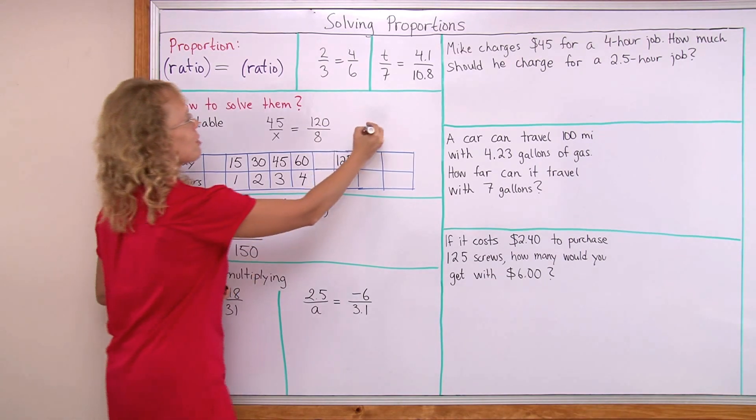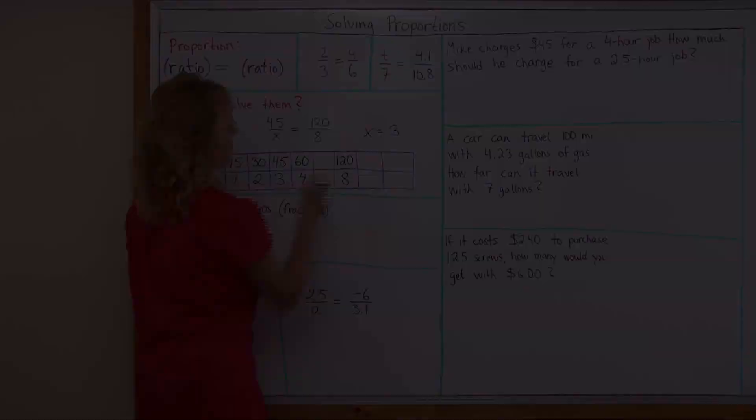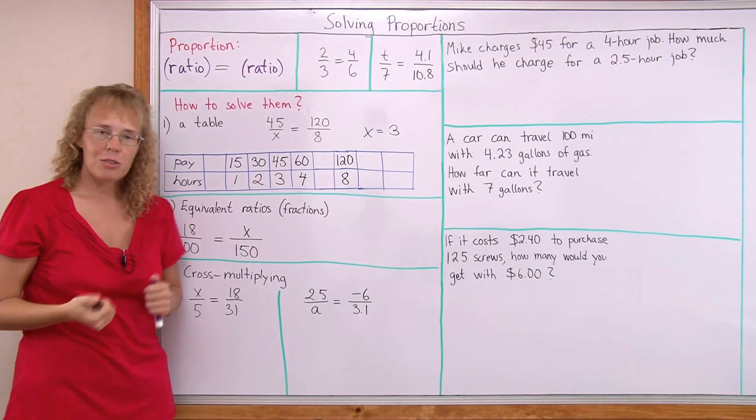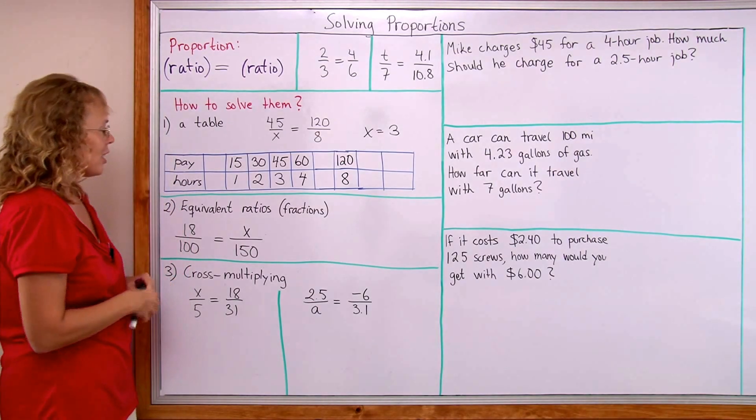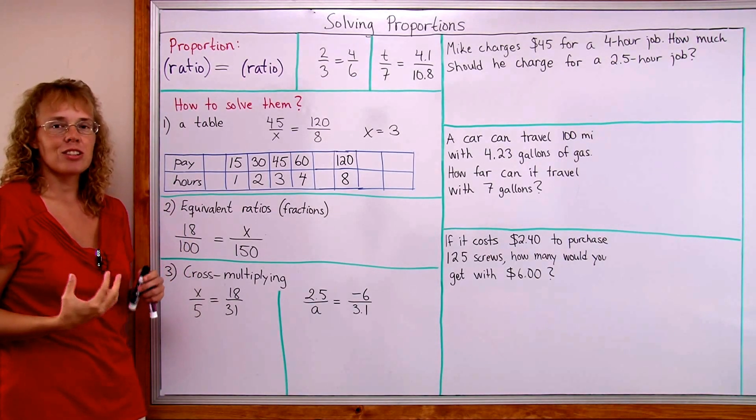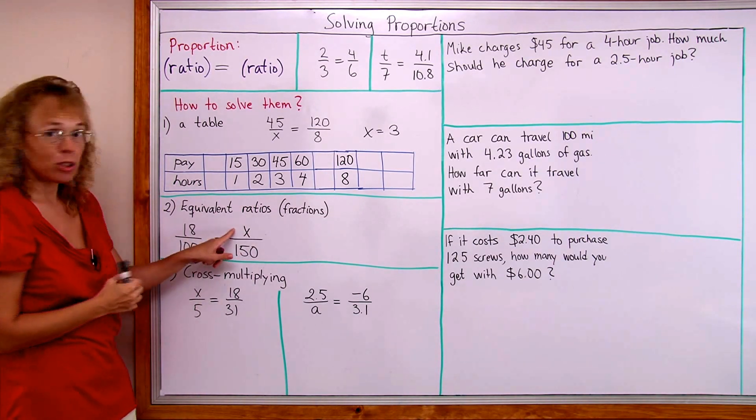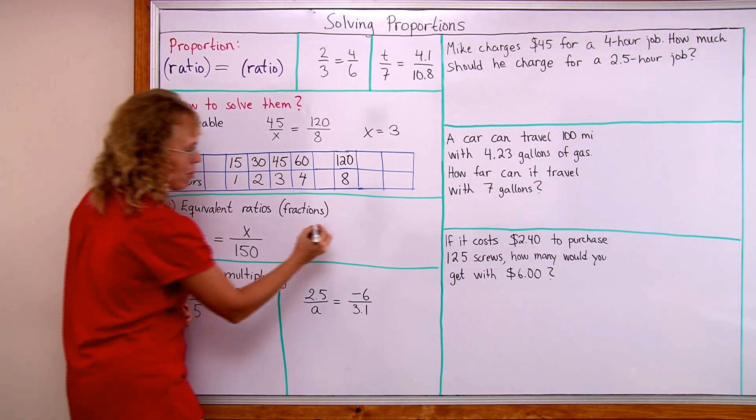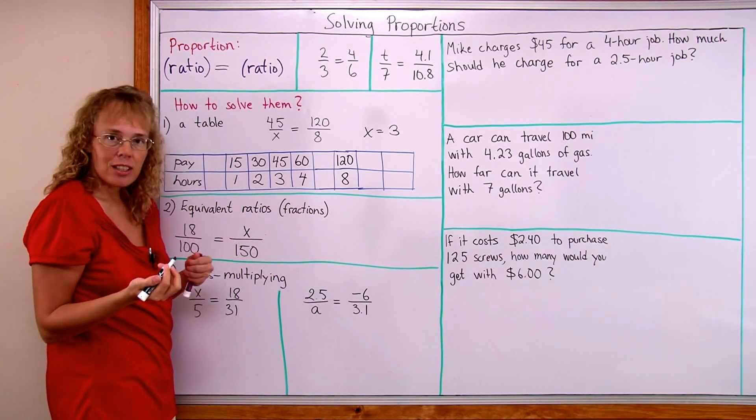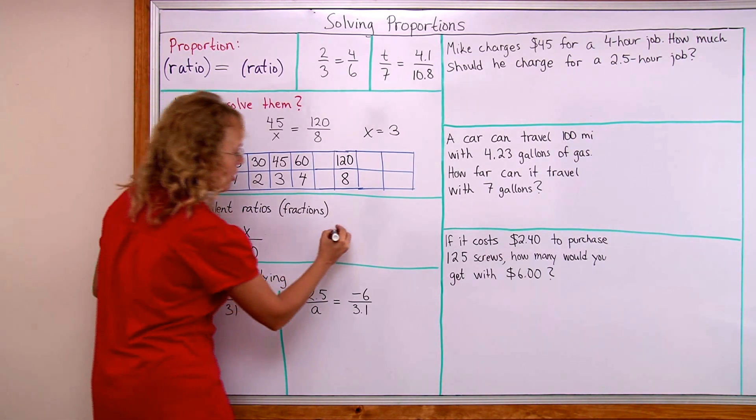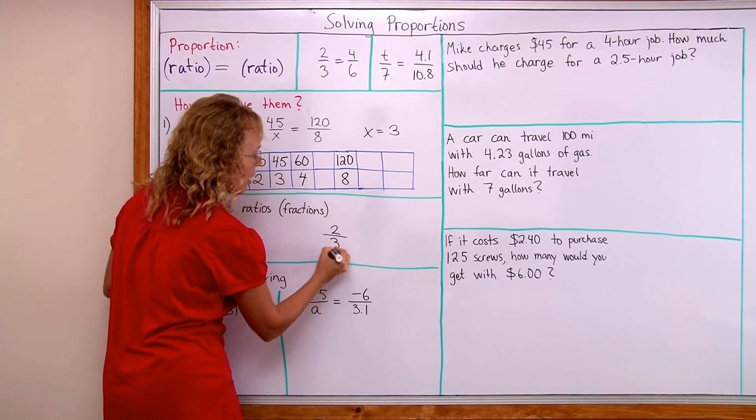For 45 dollars you would have to work three hours. Okay, so X equals 3. Another way is to think through equivalent fractions. Equivalent ratios or equivalent fractions. And for example, let's say we have this kind of a proportion we need to solve X